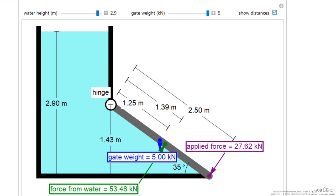This shows the distances used in the calculations: the height of the water, the height of the gate hinge, the length of the gate, and the location of the force due to the water. Notice along the gate, 1.39 meters is the location of the force.